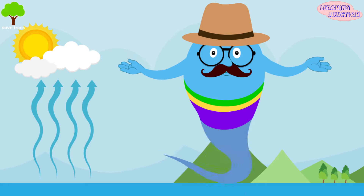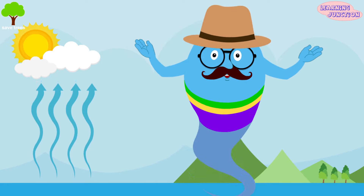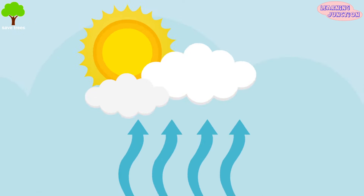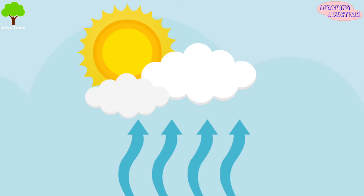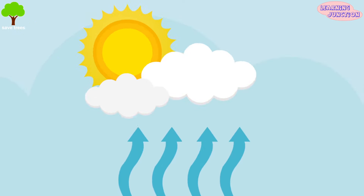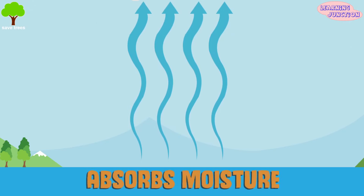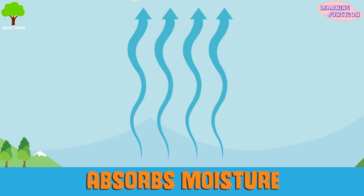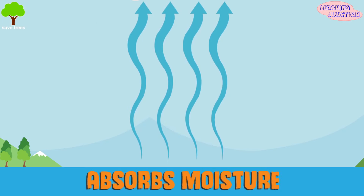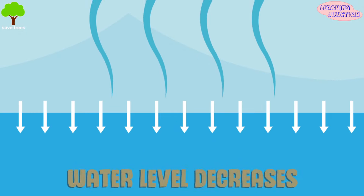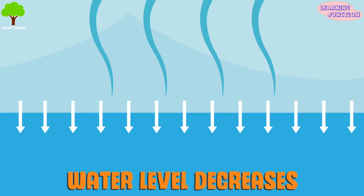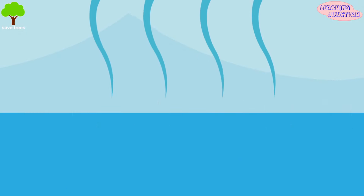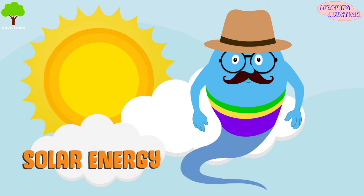Evaporation is an important part of the water cycle. Heat from the sun empowers the process of evaporation. It absorbs moisture from soil as well as the oceans and lakes, and the water level will decrease as it is exposed to solar energy.